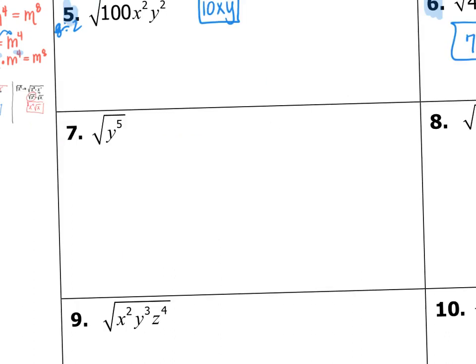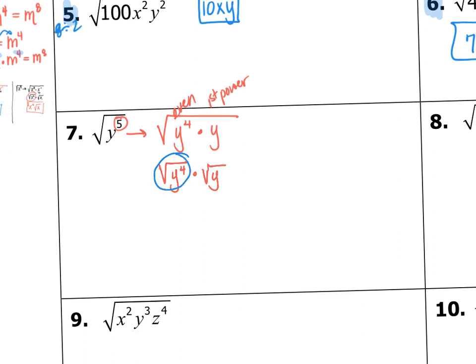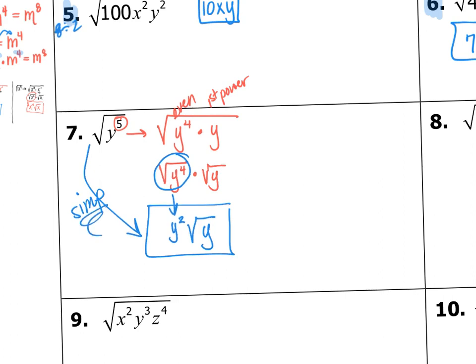Let's apply that knowledge to number 7: the square root of y to the fifth. That's an odd exponent, so we rewrite this as y to the fourth times y — the even number below it, times the first power left over. y to the fourth times y makes y to the fifth under the square root. We split them up: the square root of y to the fourth times the square root of y. The square root of y to the fourth is y squared, so the answer is y squared times the square root of y.